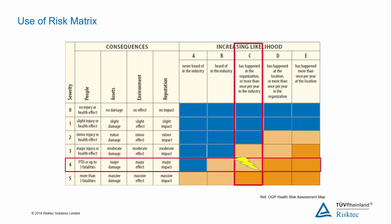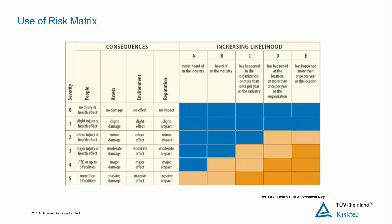The matrix has the consequences broken down into four subcategories: people, assets, environment, and reputation. So we can use the same matrix to assess the risk to our physical facilities, the environment, or our company's reputation, as well as the risk to people. This doesn't mean that a severity level 4 to people is of equal importance as a severity level 4 to the environment — it simply means that a single risk matrix template has been produced to cover the four types of event.